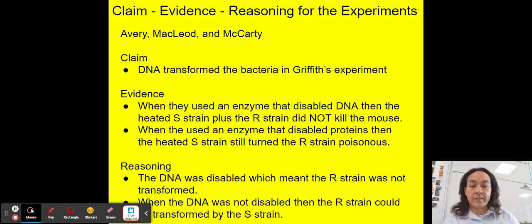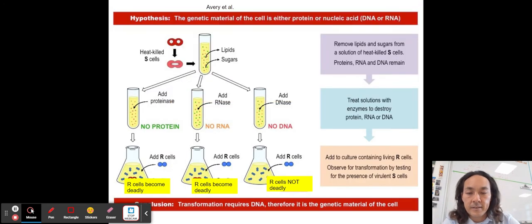For this one, you can look at it and say that DNA was a transforming factor. This experiment is challenging for students, I found in the past. So they use this enzyme to disable the DNA. And when they disable the DNA, then when you put the heat killed S strain plus the R strain together, the R strain is not transformed. It does not kill the mouse. So even though it's like a double negative, even though it doesn't transform, then that's showing you that DNA was the transforming factor. Because when it's removed from the equation, then it's not transformed. And so here, the converse, they use an enzyme to disable proteins and the heat S strain still transforms the R strain, still makes it poisonous. So therefore, it is not proteins that are the transforming factor, it is DNA.